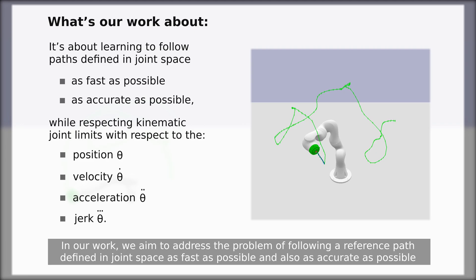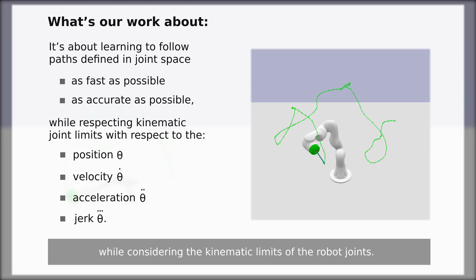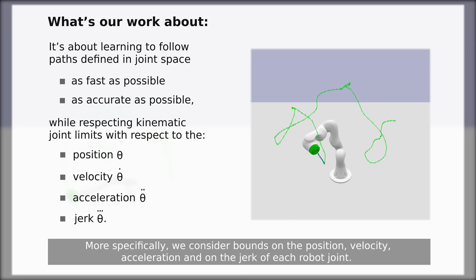In our work, we aim to address the problem of following a reference path defined in joint space as fast as possible and also as accurate as possible while considering the kinematic limits of the robot joints. More specifically, we consider bounds on the position, velocity, acceleration and on the jerk of each robot joint.